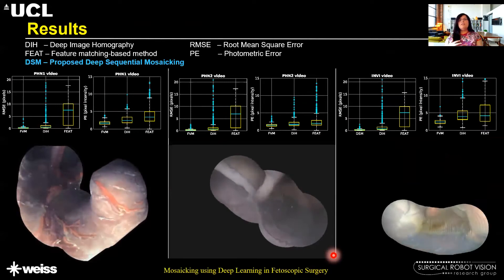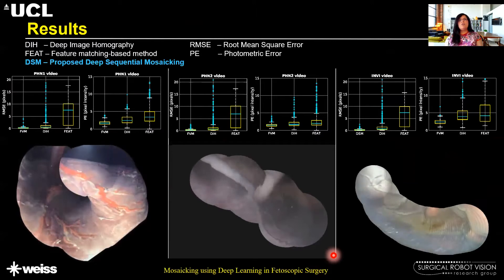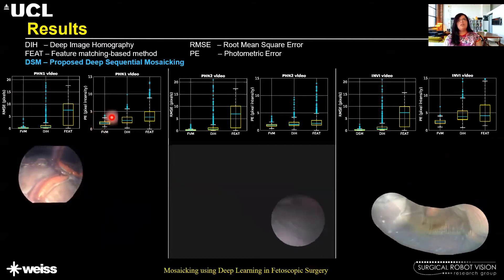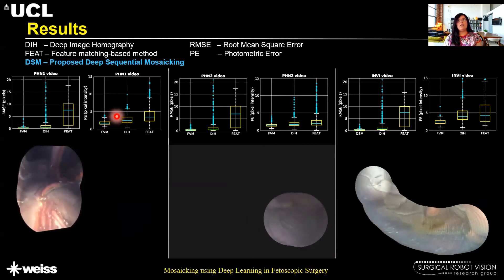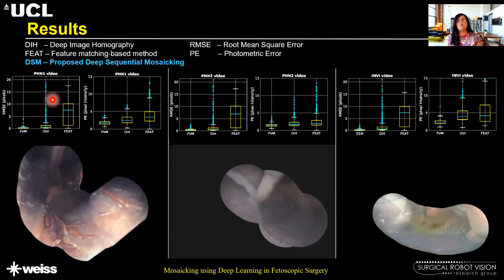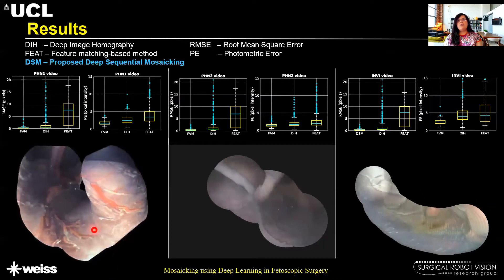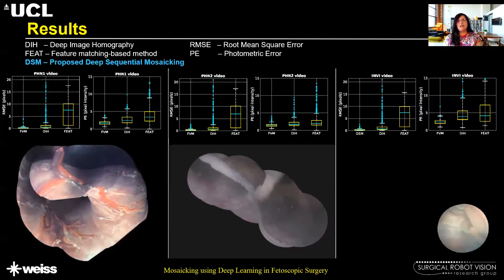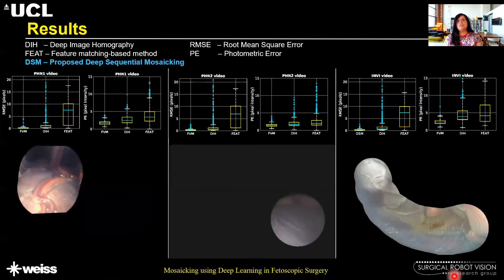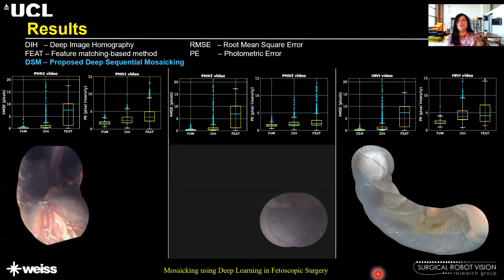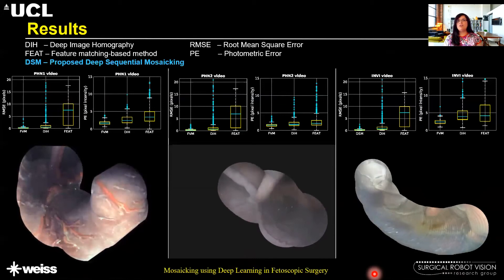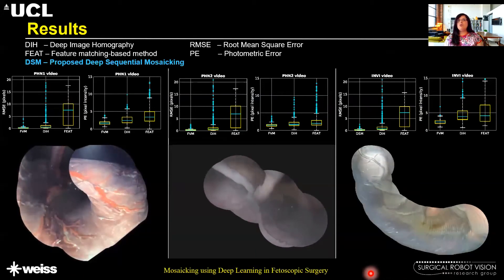Here you can see three results from our dataset where we performed both qualitative and quantitative analysis. In terms of quantitative analysis, we reported root mean square and photometric error for three methods, including a feature-based matching approach and the deep image homography approach. Results are shown from one of the phantom datasets, our lab's TTTS phantom, and finally from in-vivo data, where these mosaics show quite minimal drift.